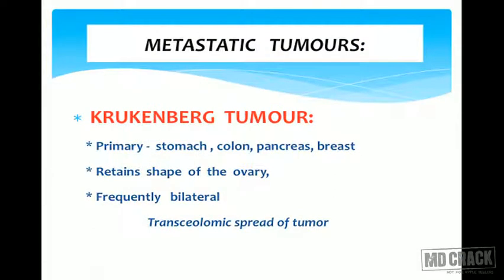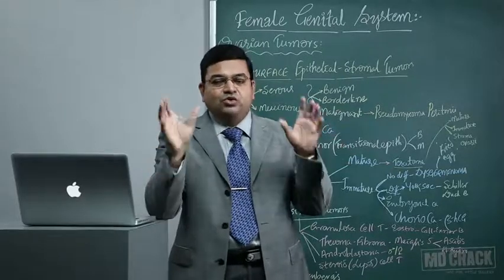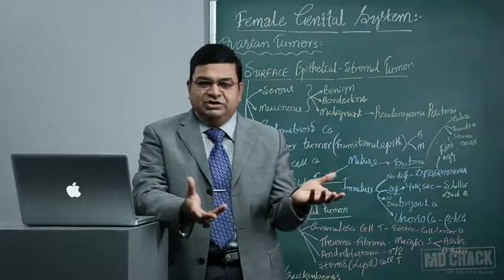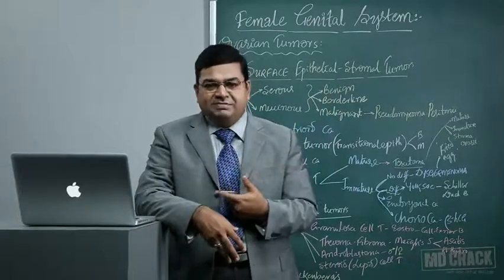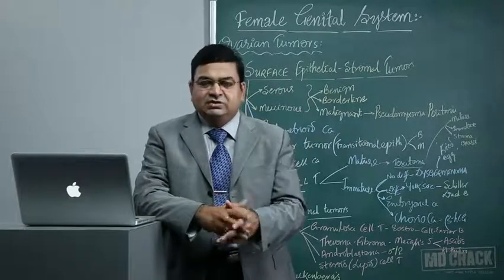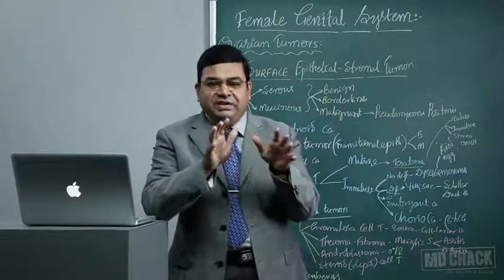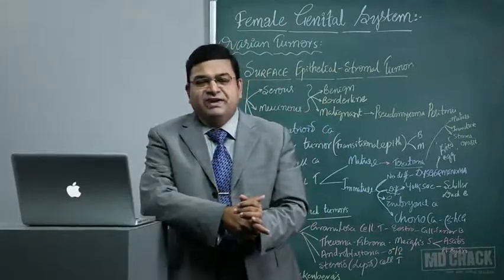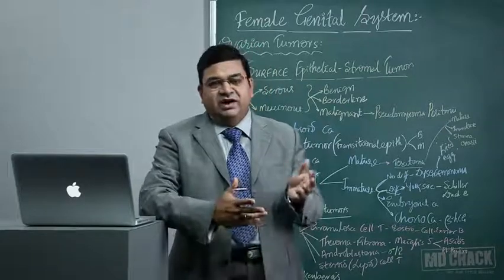The Krukenberg tumor must not be forgotten — the primary can be in stomach, colon, pancreas, or breast. Both ovaries are involved but retain their shape while being hugely enlarged. Microscopically, it shows metastatic adenocarcinoma — not primary. Most commonly, gastric signet ring cell adenocarcinomas spread via trans-coelomic route, traveling along the coelomic cavity to reach and settle in the ovaries bilaterally. This is a favorite exam question.